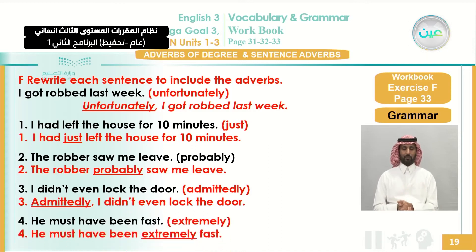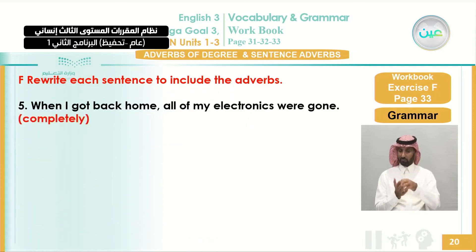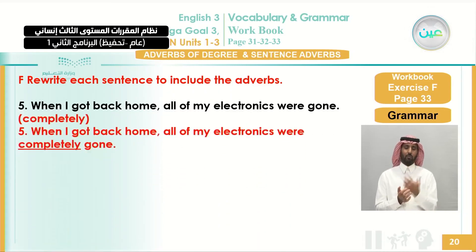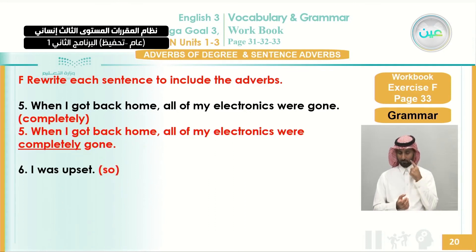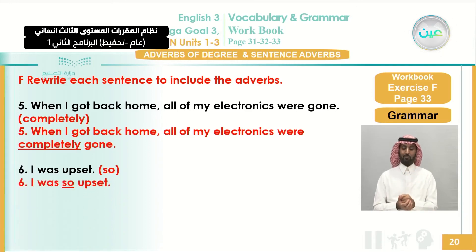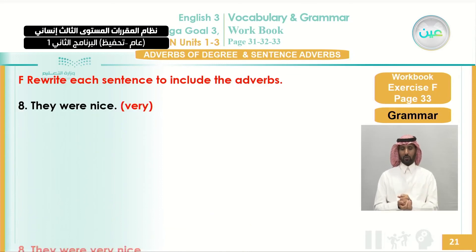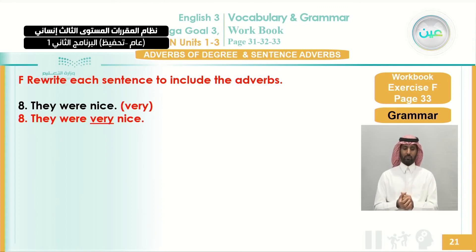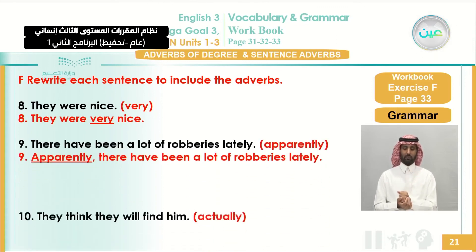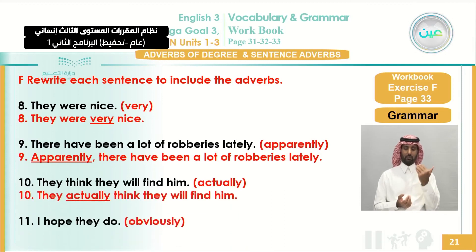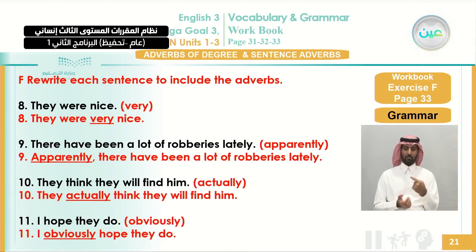For number five, use completely. I was completely upset — completely intensifies the adjective upset. Naturally can be used as a sentence adverb. Very is the most common and famous adverb of degree. The model answers for numbers nine, ten, and eleven are shown.